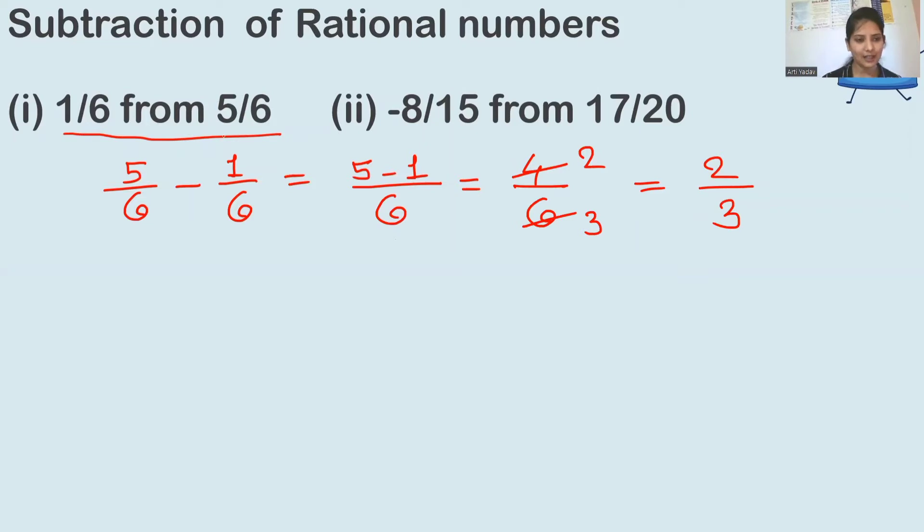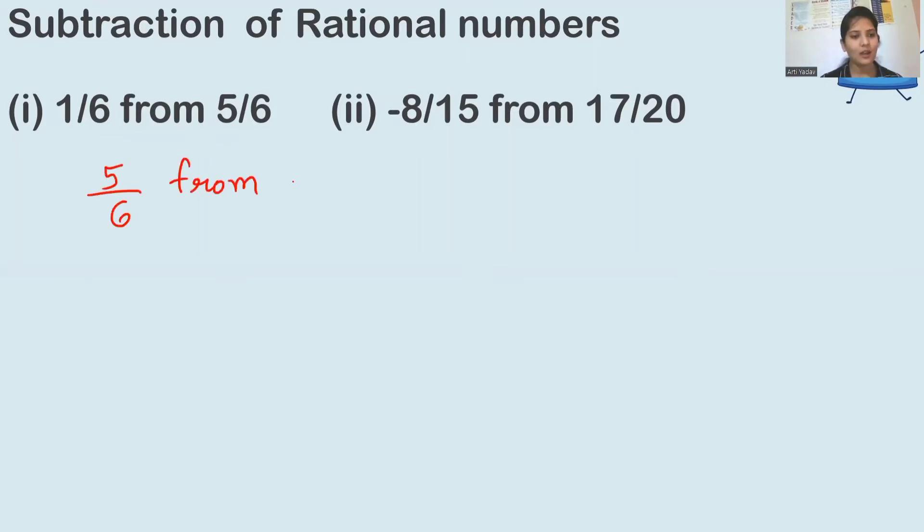I have taken this first example so that you can understand when denominators are same, we simply solve it like this. But there's a most important thing - the question could be asked in a different way. You have to subtract 5 upon 6 from minus 1 upon 6.